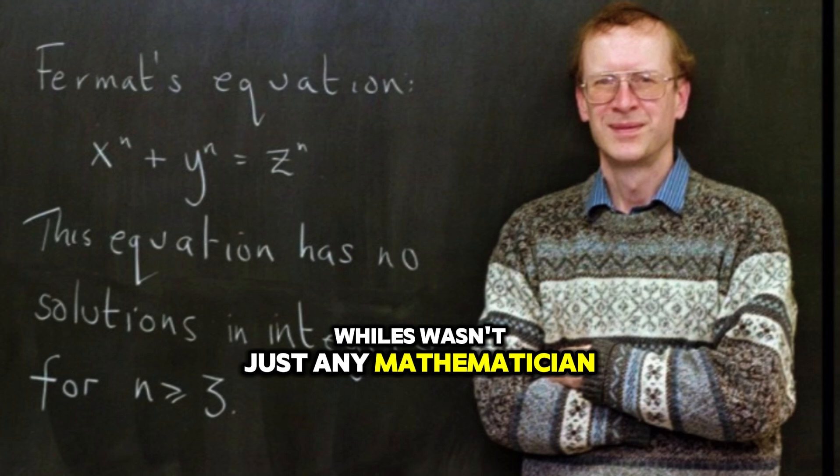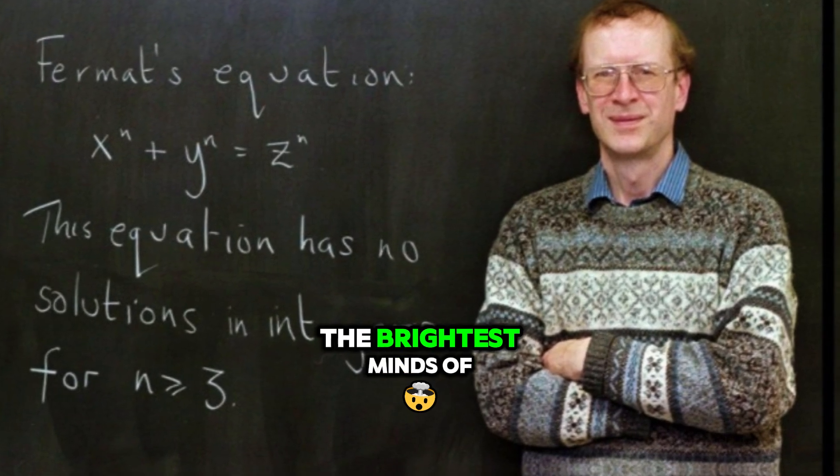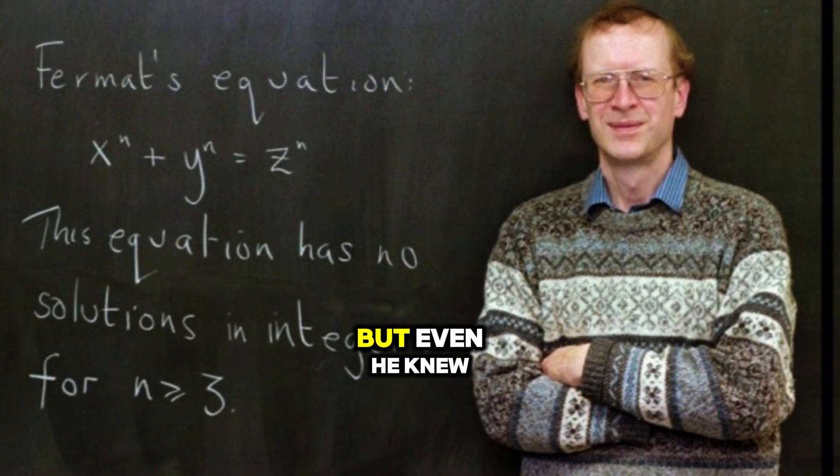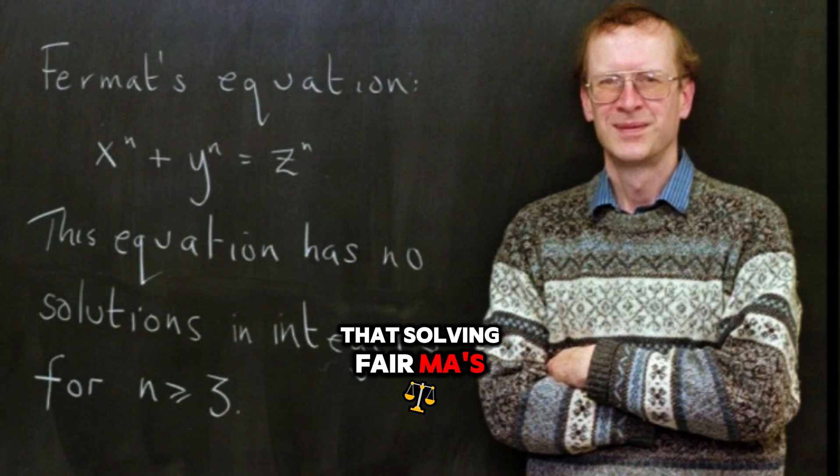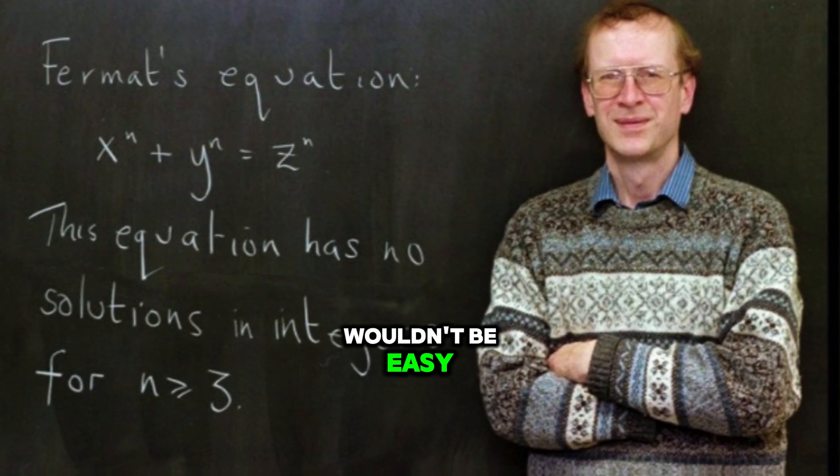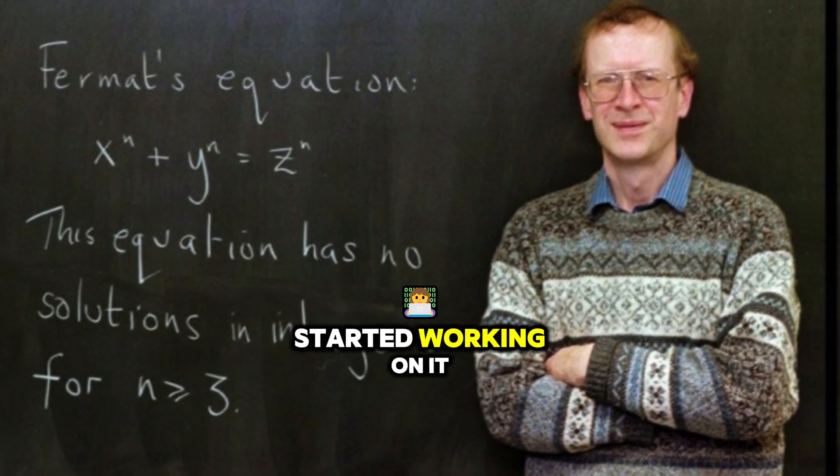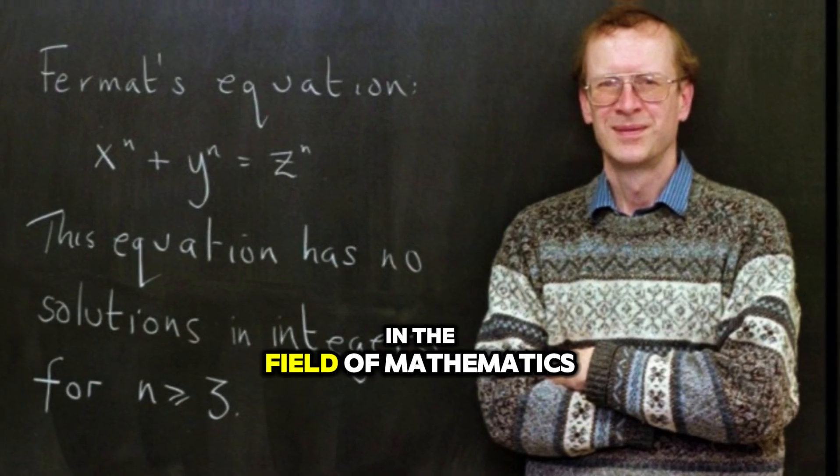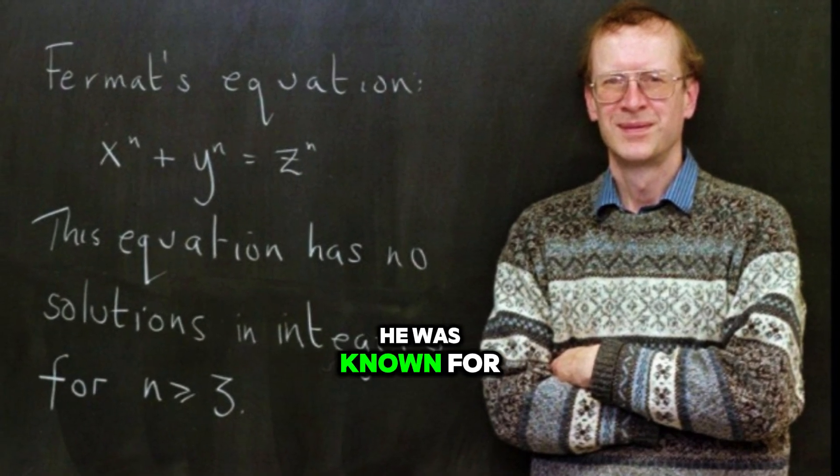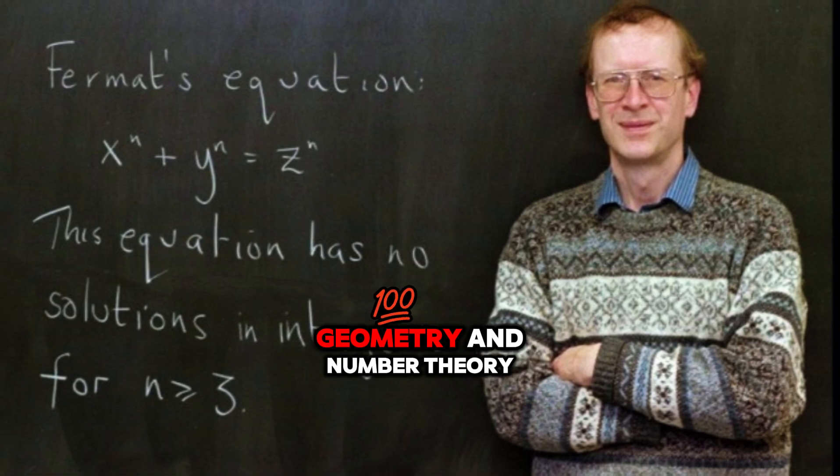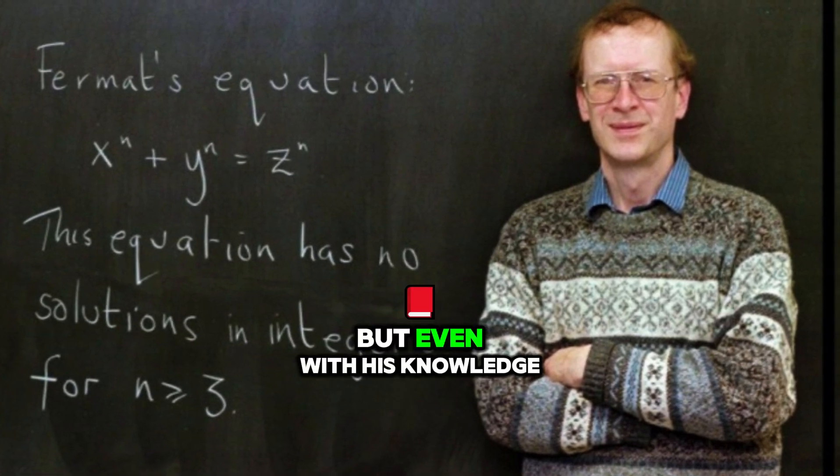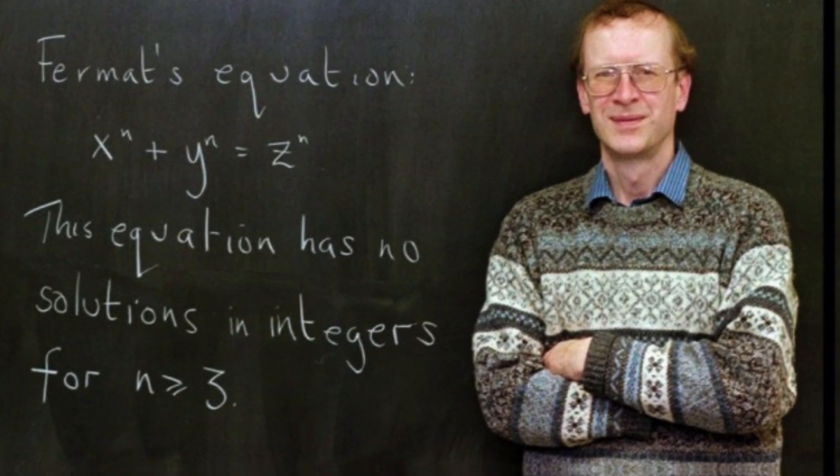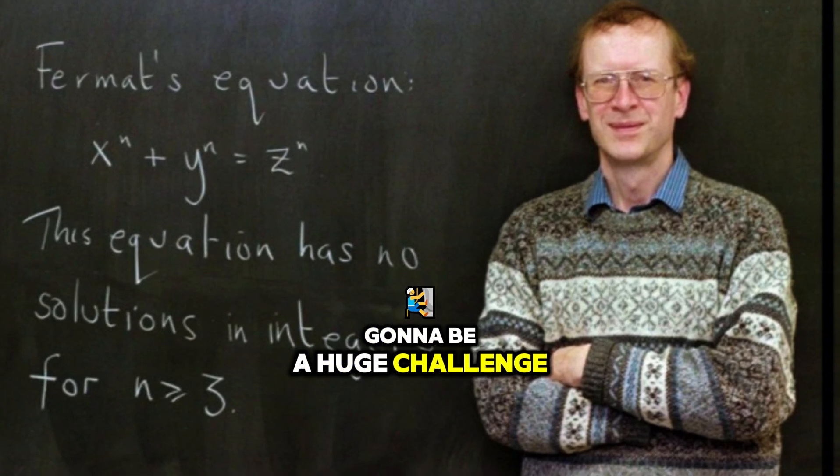Wiles wasn't just any mathematician. He was one of the brightest minds of his generation. But even he knew that solving Fermat's Last Theorem wouldn't be easy. By the time Wiles started working on it, he had already built a solid reputation in the field of mathematics. He was known for his expertise in algebraic geometry and number theory. But even with his knowledge and experience, he knew this was going to be a huge challenge.